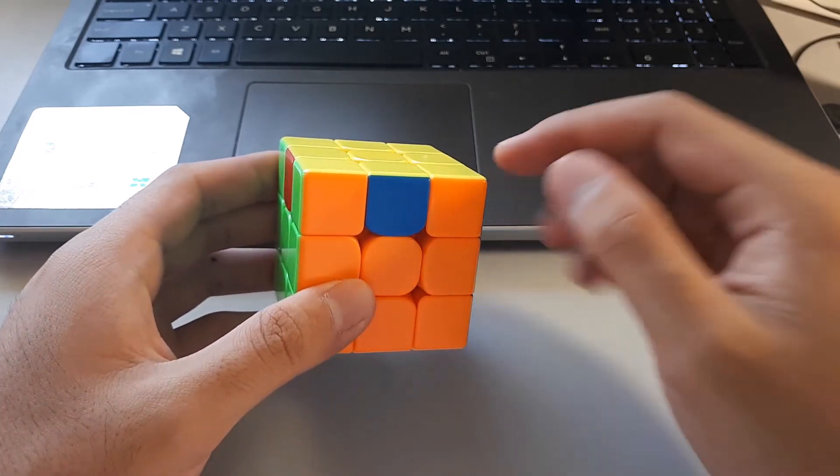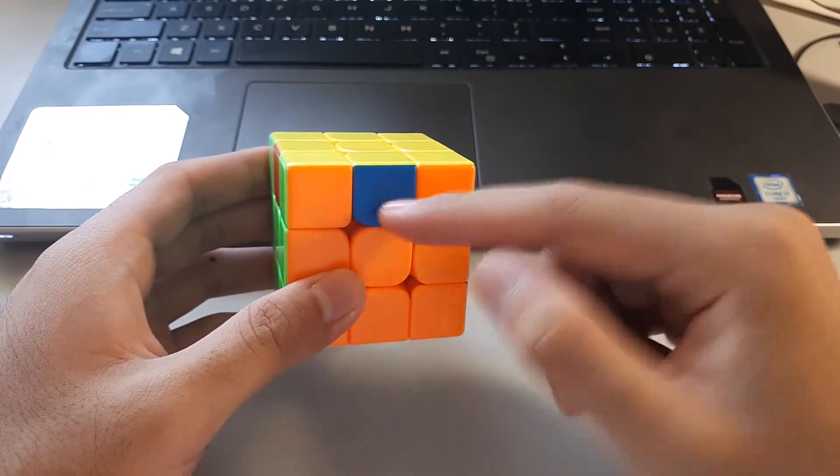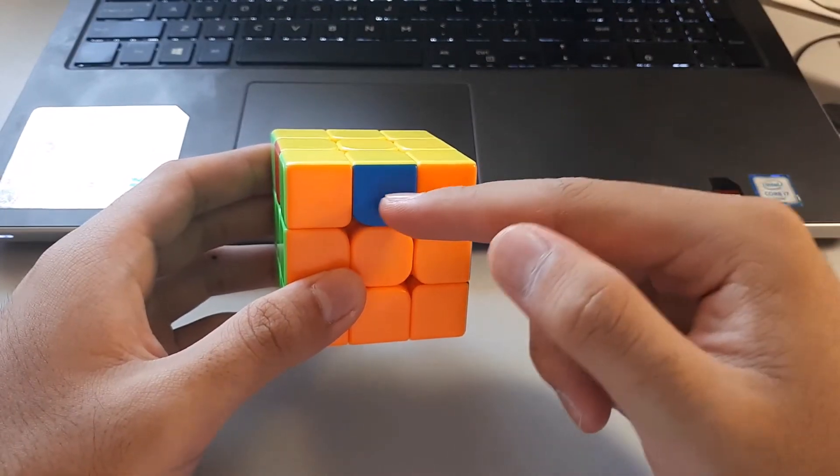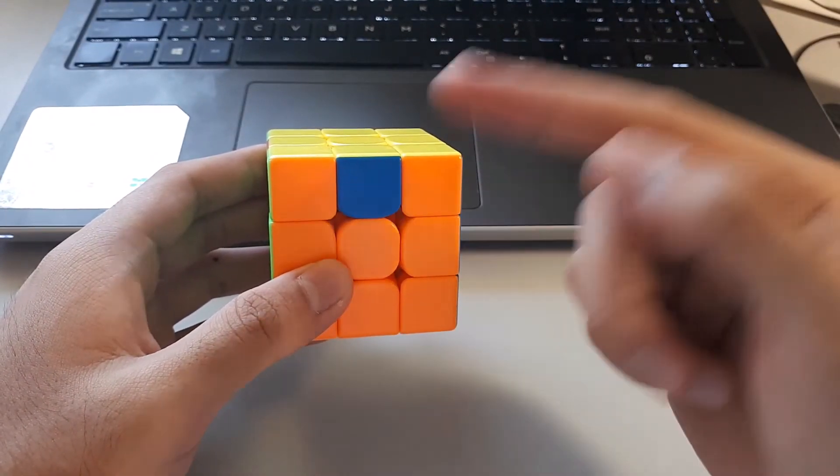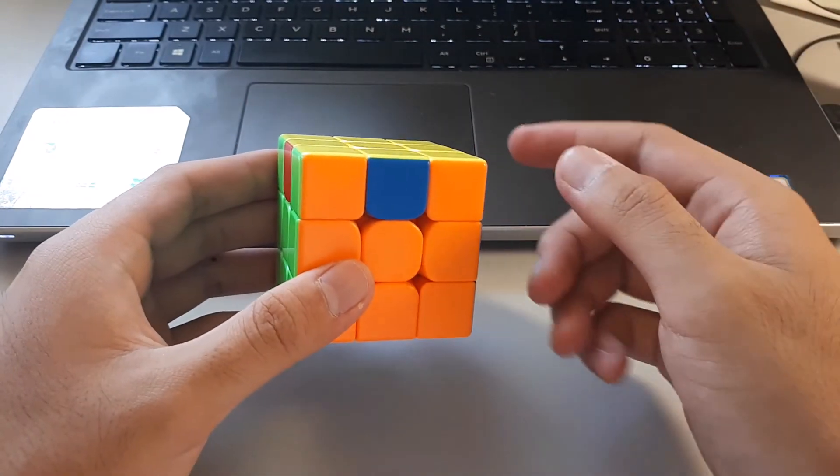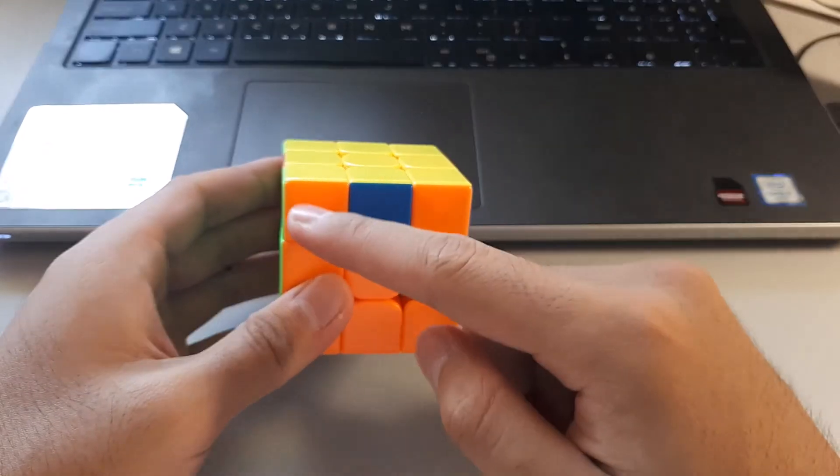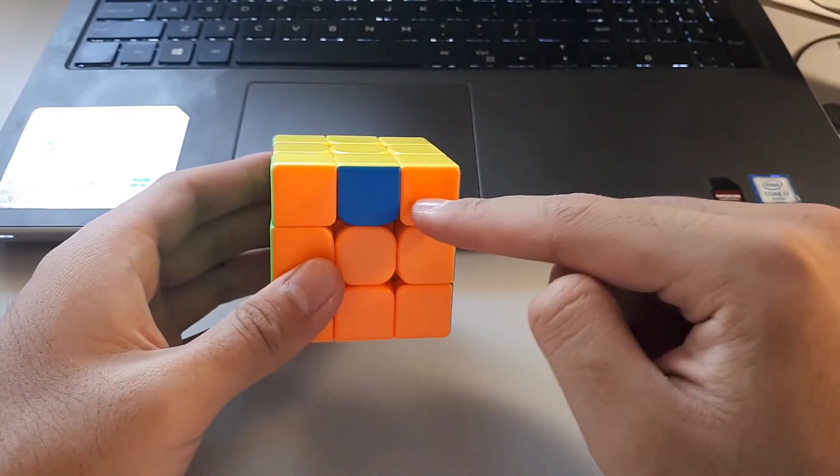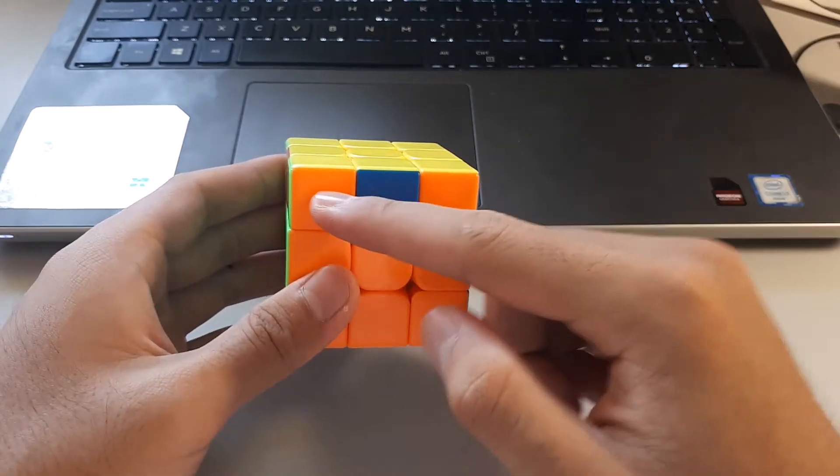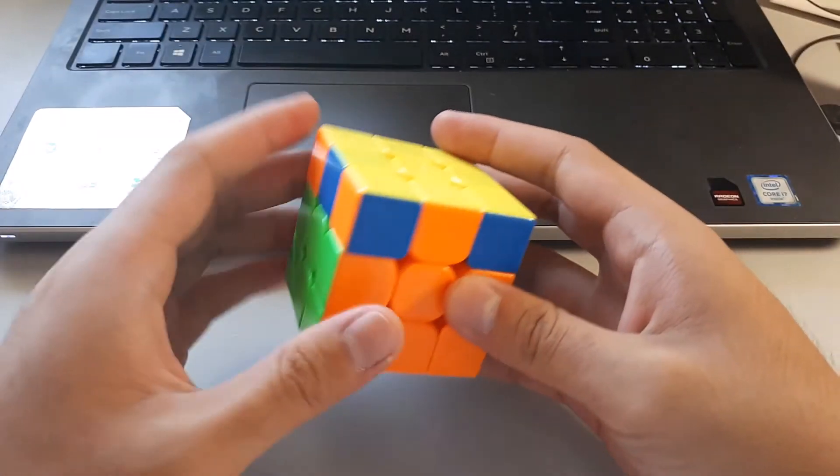The way I recognize it is that I look for the color in the middle. So in this case, blue's in the middle, but that's not the important color. The important one is the color opposite of blue, which in this case is green. If I do the algorithm, green's the important color because green's the color that will end up at the front. So if I do a U to match up green and green, that solves the cube.